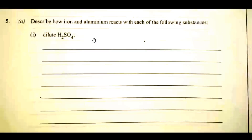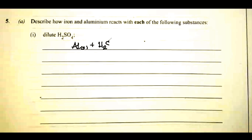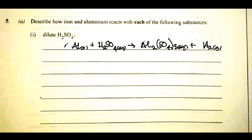Describe how iron and aluminium react with dilute H₂SO₄. Aluminium reacts with H₂SO₄ to give Al₂(SO₄)₃ (aqueous) plus hydrogen gas. The coefficient should be 2 for Al₂(SO₄)₃ and 3 for H₂SO₄.